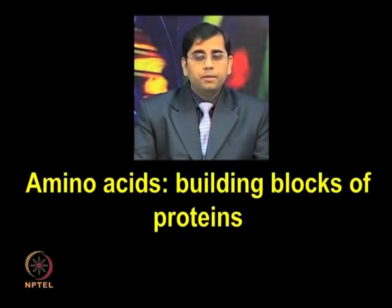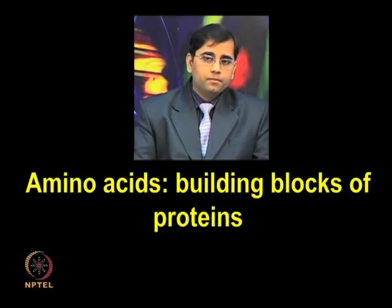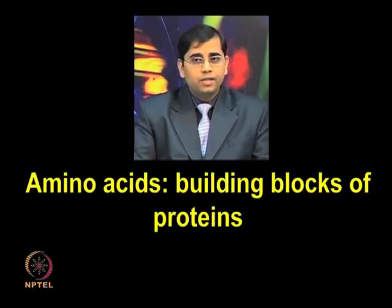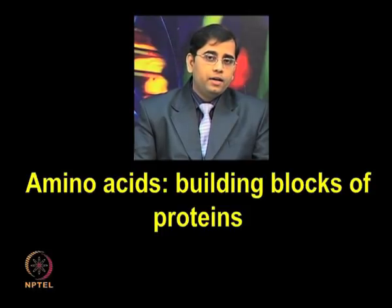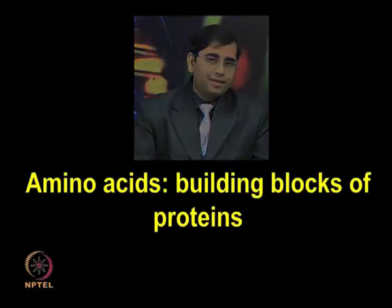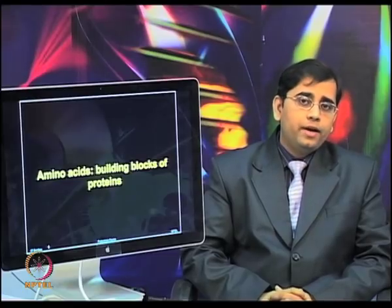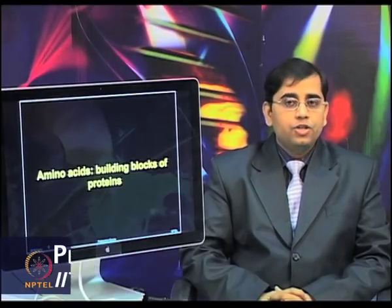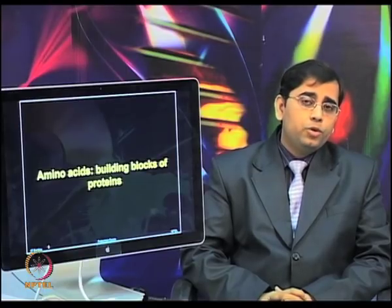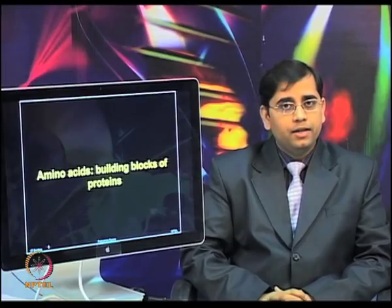Amino acids constitute the basic monomeric unit of proteins, which are joined by peptide bonds. The 20 standard amino acids can be arranged in several ways, giving rise to numerous proteins having different structural and functional properties. The diversity and versatility of these 20 amino acids enables a range of protein functions due to the side chains, which can vary in size, shape, hydrogen bonding capacity, hydrophobic character, charge, and chemical reactivity. Proteins perform much more diverse functions as compared to DNA.